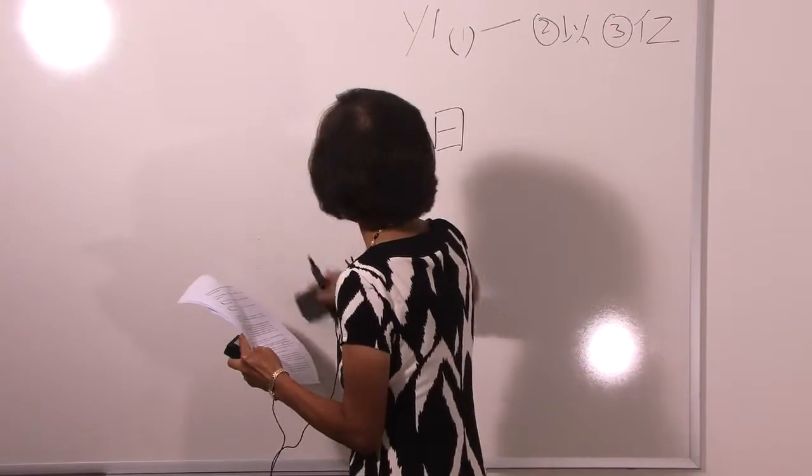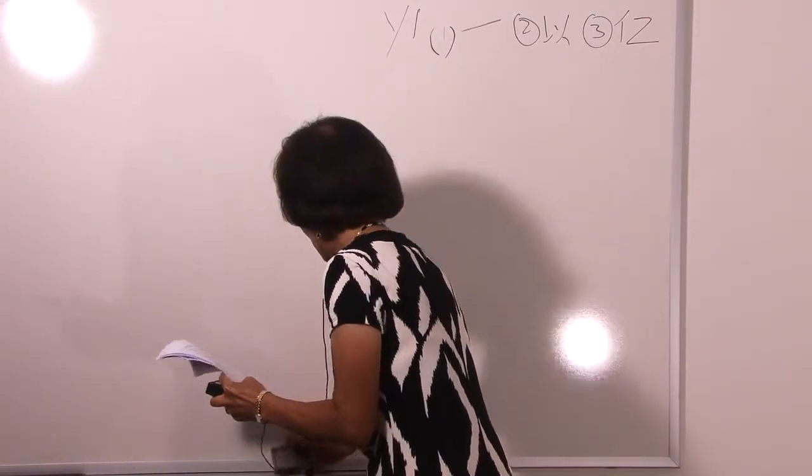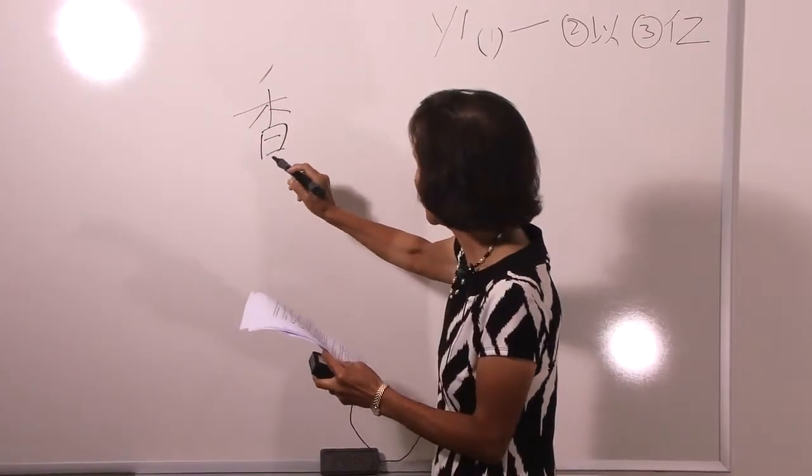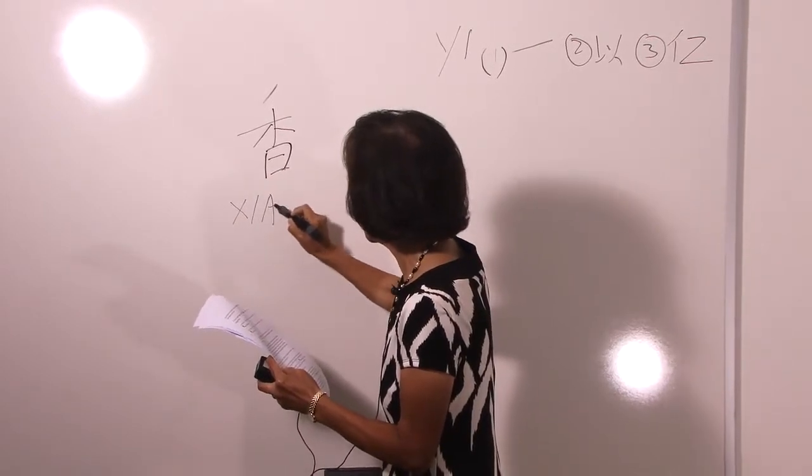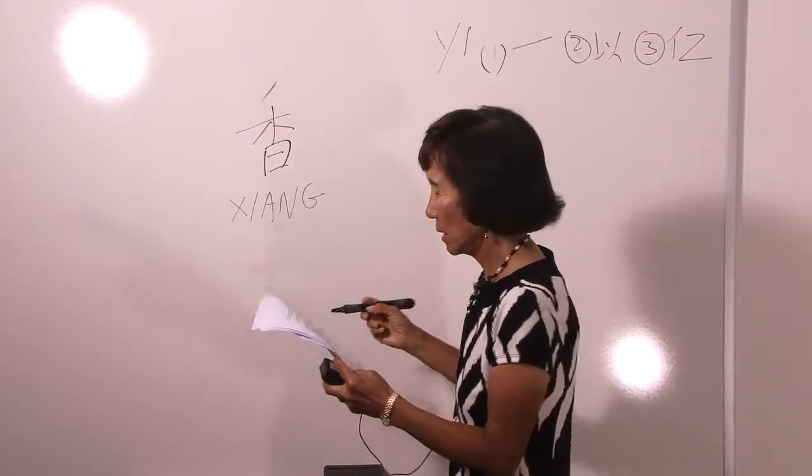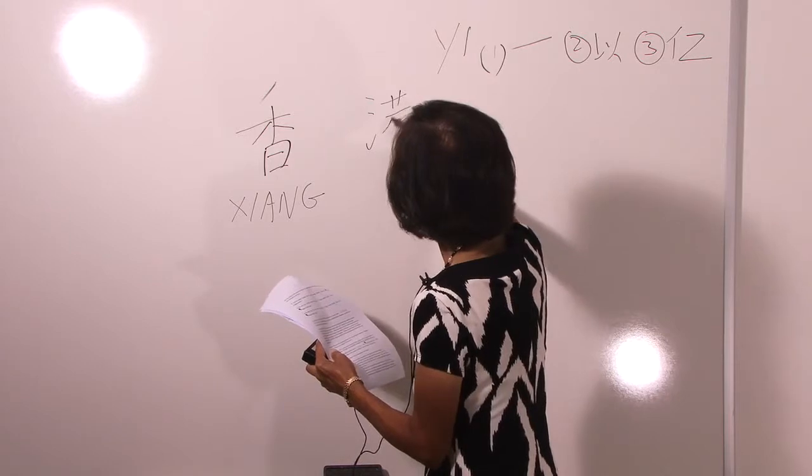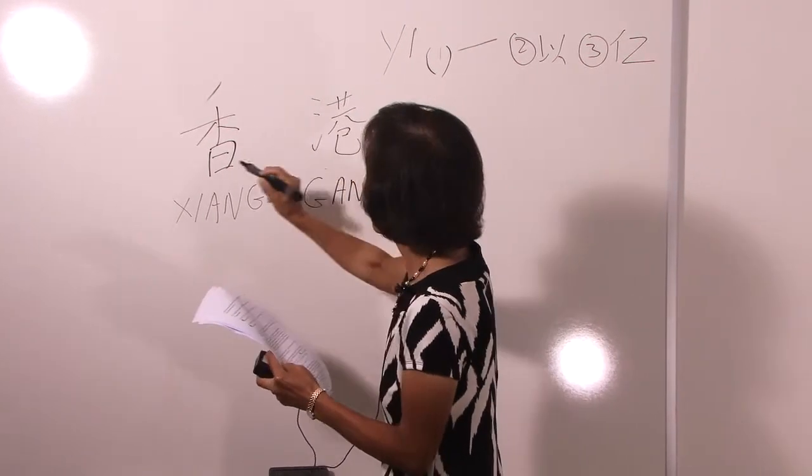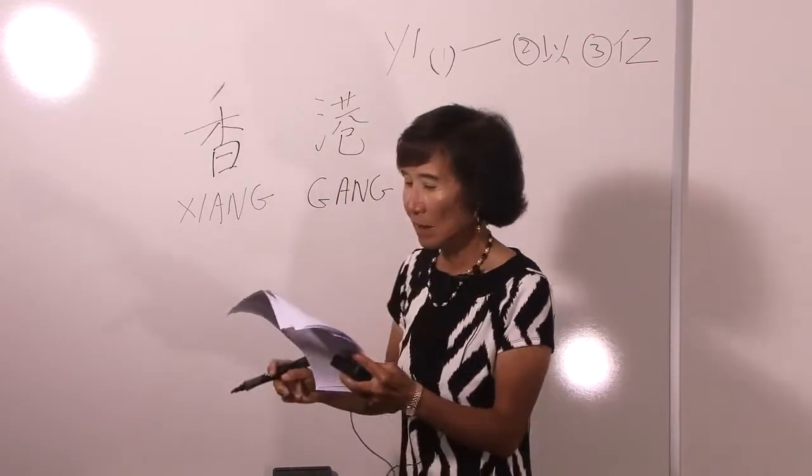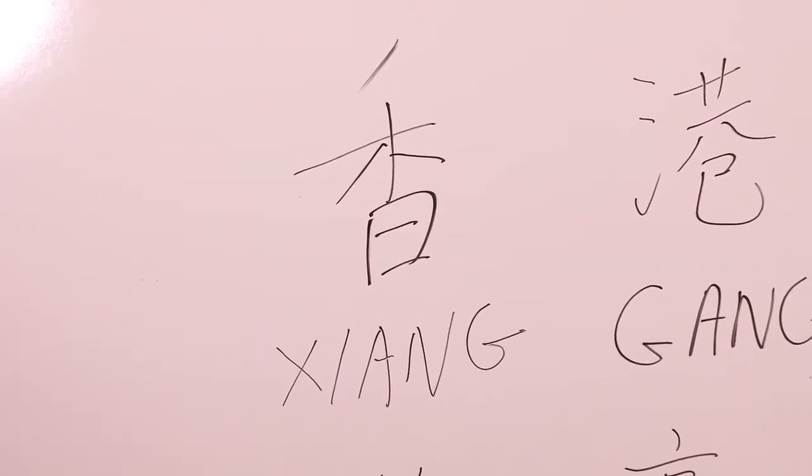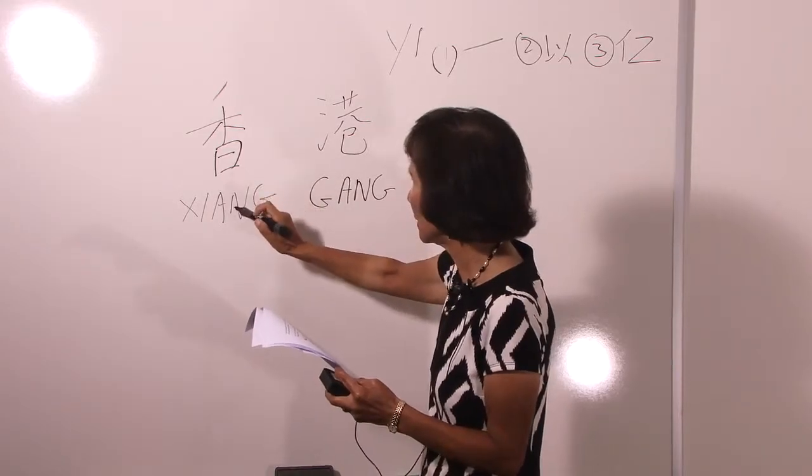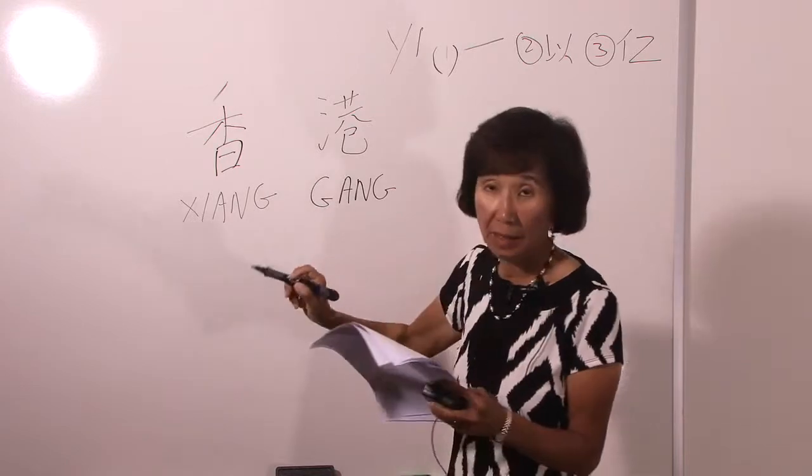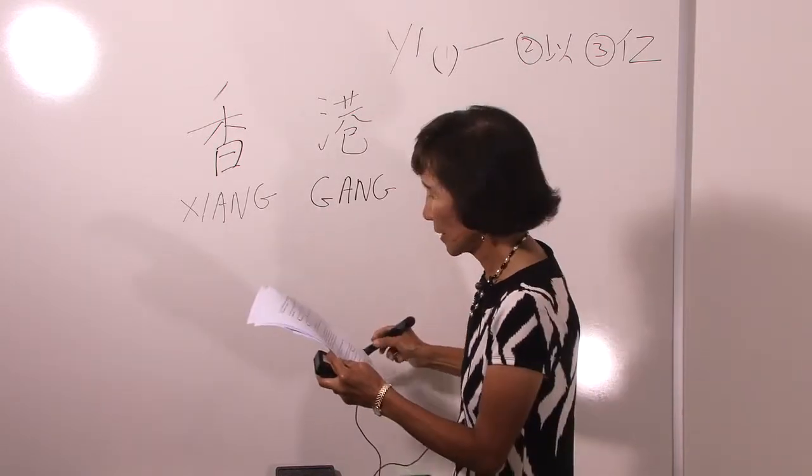For instance, Hong Kong, the word for Hong in Mandarin is xiang. It's spelled X-I-A-N-G because in Mandarin is pronounced xiang. And it means fragrant. And the word for Hong Kong is pronounced xiang, Hong Kong in Cantonese, xiang-gang, or xiang-gong. So this word actually means fragrant, and this word means harbor.